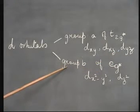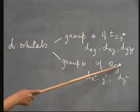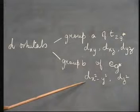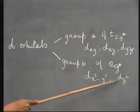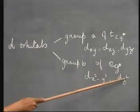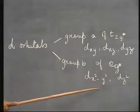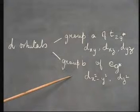The group B of orbitals called the eg star orbitals are two, that is, the dx squared minus y squared orbital and the dz squared orbital. In the free metal ion, all the five orbitals have got the same energy.